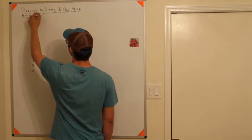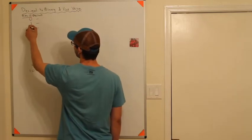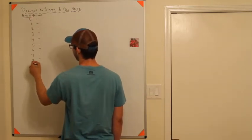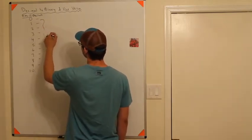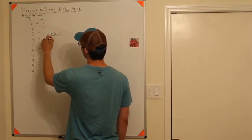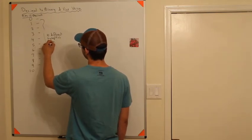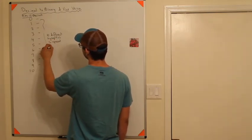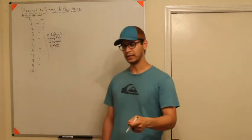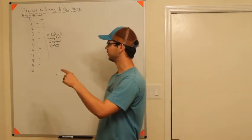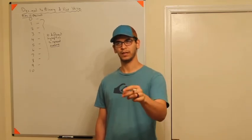Deci stands for 10. What you realized was you have 1, 2, 3, 4, 5, 6, 7, 8, 9, 10 — you have 10 different, I'm going to call them hieroglyphics, to represent numbers. And when you got to 9, which is technically the 10th number — because you started at 0 — when you got to 9, you ran out of symbols to represent the number 10.